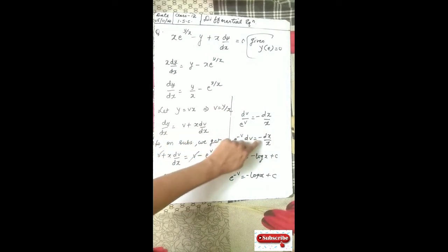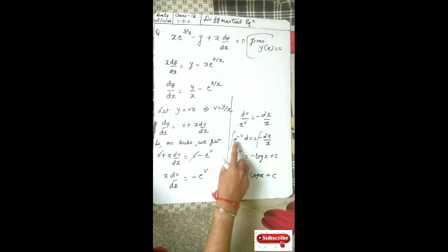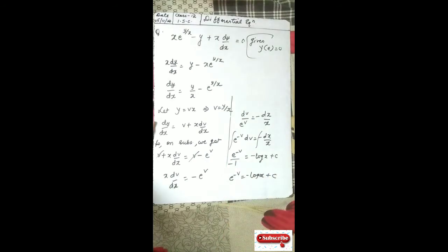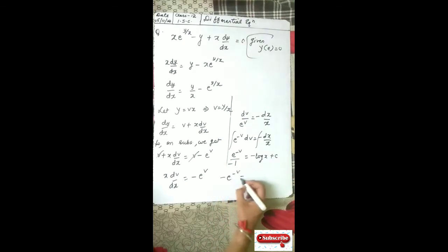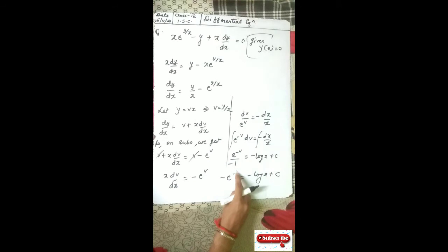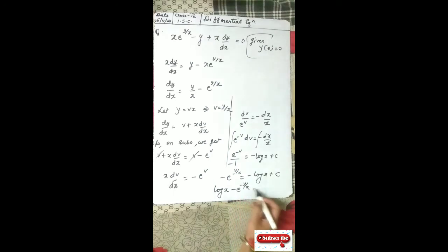Separate variables: e^(−v) dv equal to minus dx/x. Integrate both sides. The integral of e^(−v) is e^(−v) divided by minus 1. On the right side we get minus log x plus c. So: minus e^(−v) equal to minus log x plus c. In place of v put y/x, giving: log x minus e^(−y/x) equal to c.